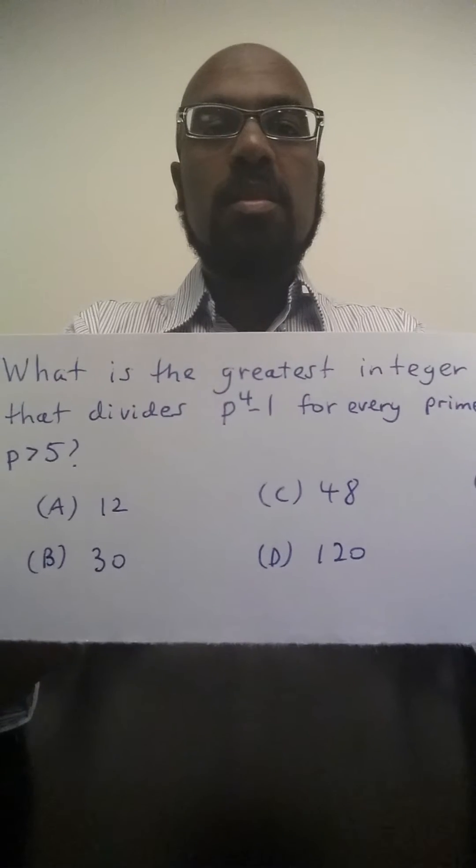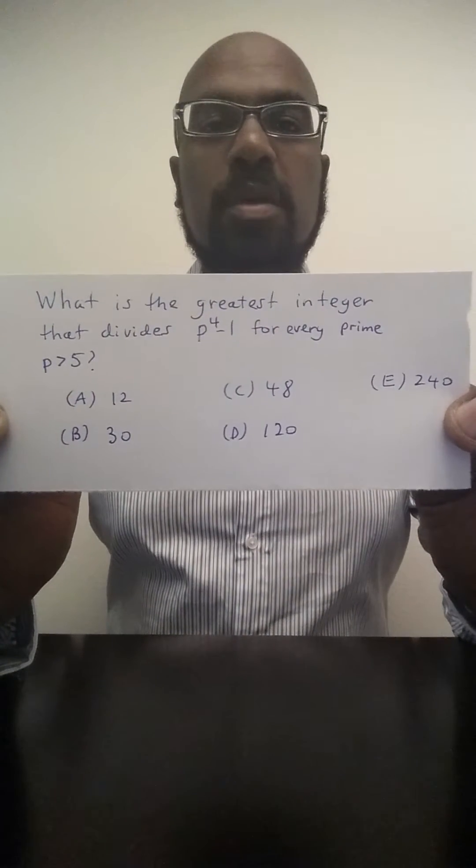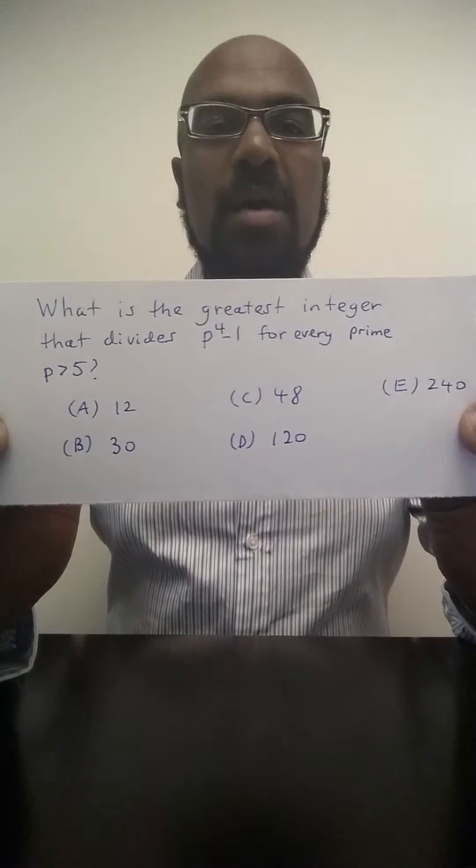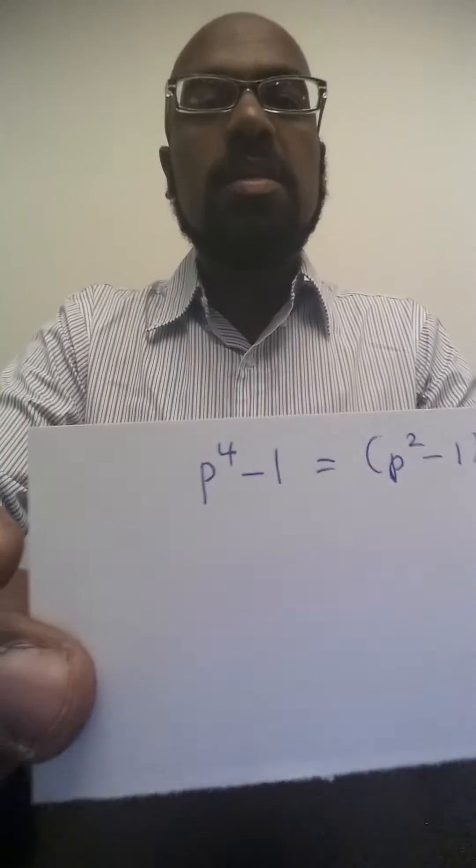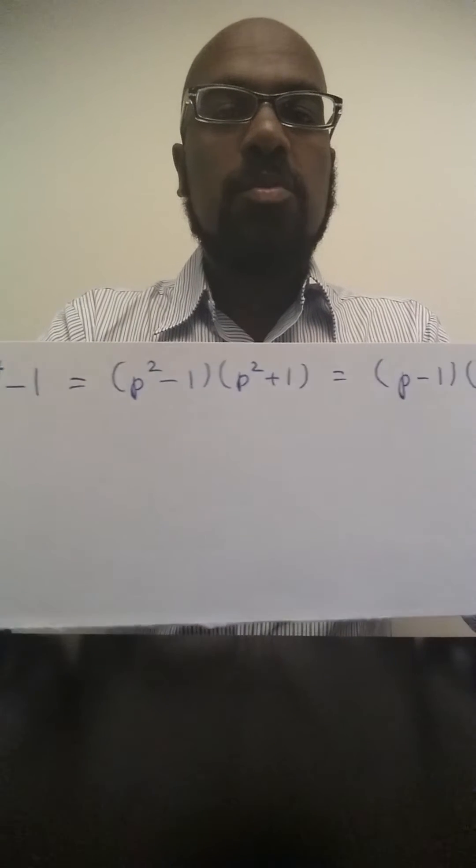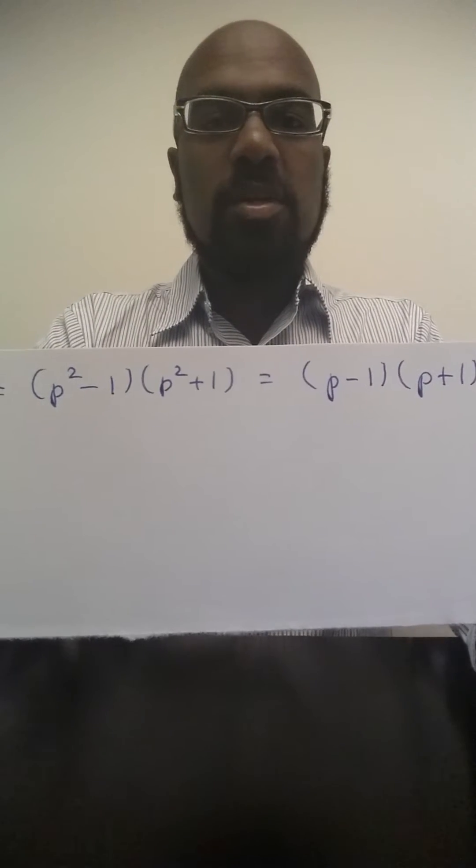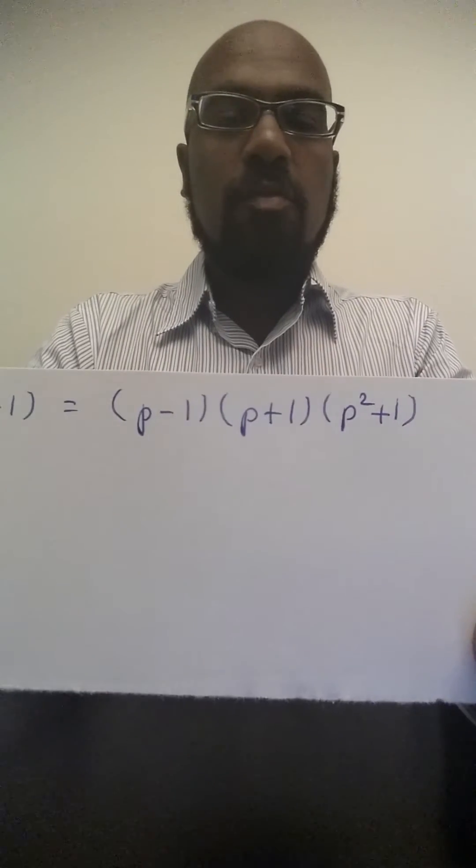Okay so what we'll do is take a look at the expression p to the fourth minus 1, do some factoring and look at the factors to figure out what integers divide it. So p to the fourth minus 1 is the difference of squares and so we can factor it. If we fully factor the remaining difference of squares p squared minus 1 we get the following factored form.